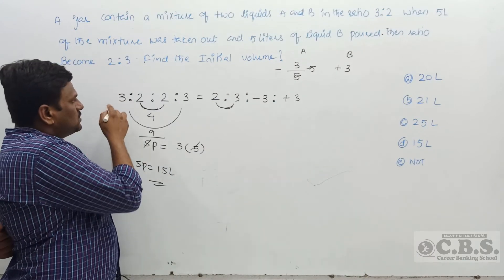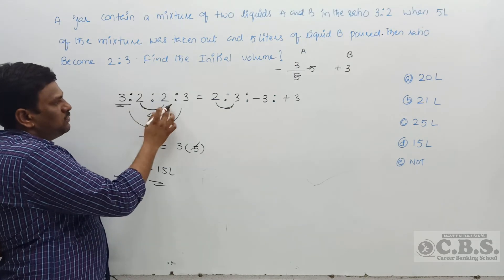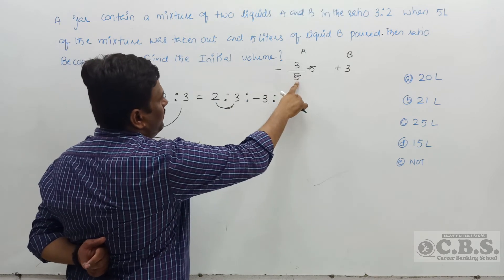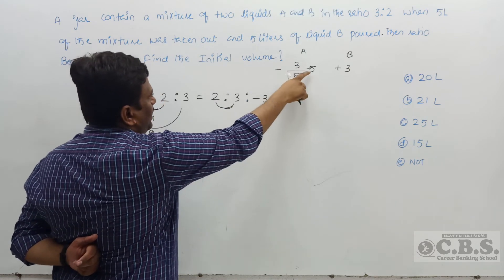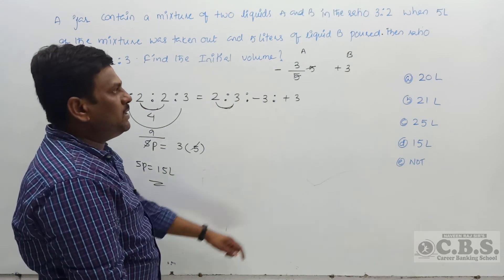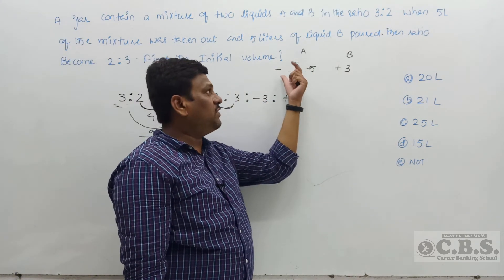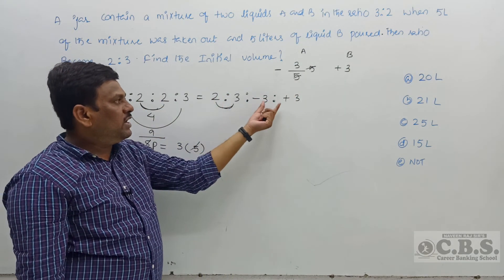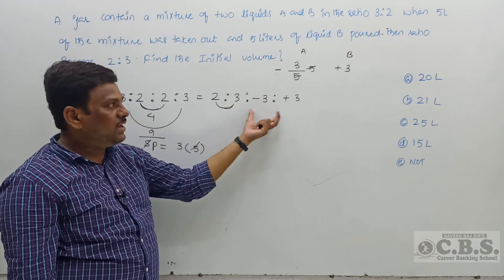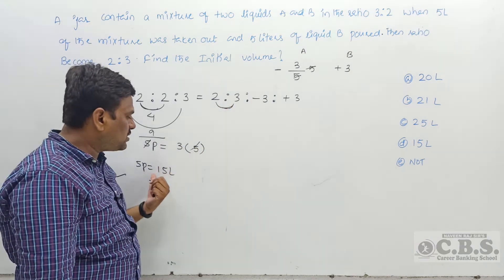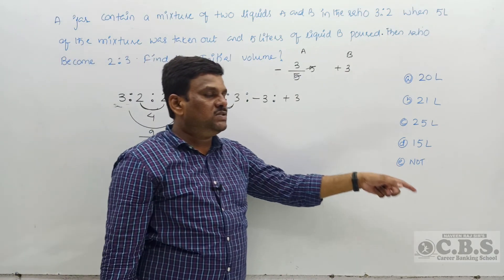Applying the proportion: initial 3:2, final 2:3, change -3:+3. Same number 3 is common — opposite signs, so add: 2 + 3 = 5. Then 5 and 5 cancel. One part = 3 liters. Initial is 5 parts, so 5 × 3 = 15 liters. Option D is the right answer. This confirms the proportional concept: same number taken common, opposite signs means add the ratio values.